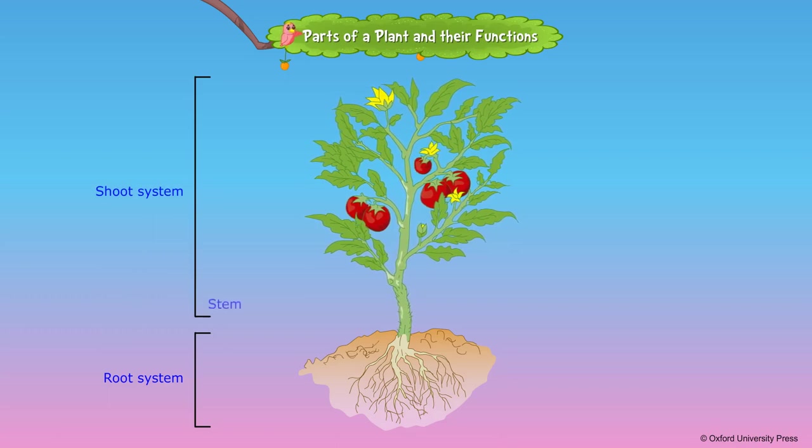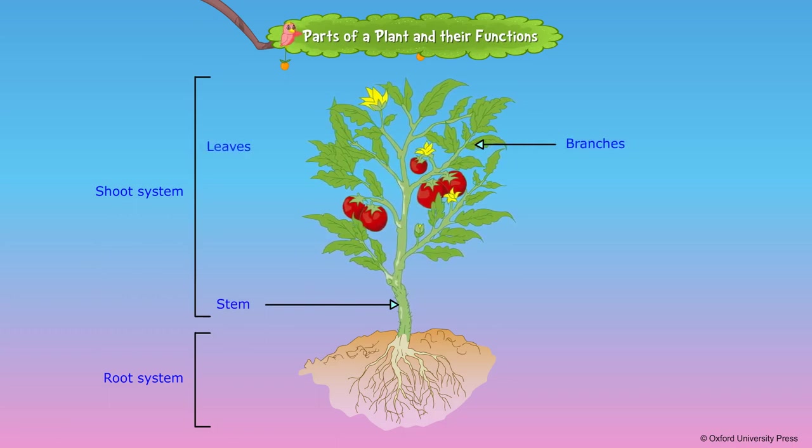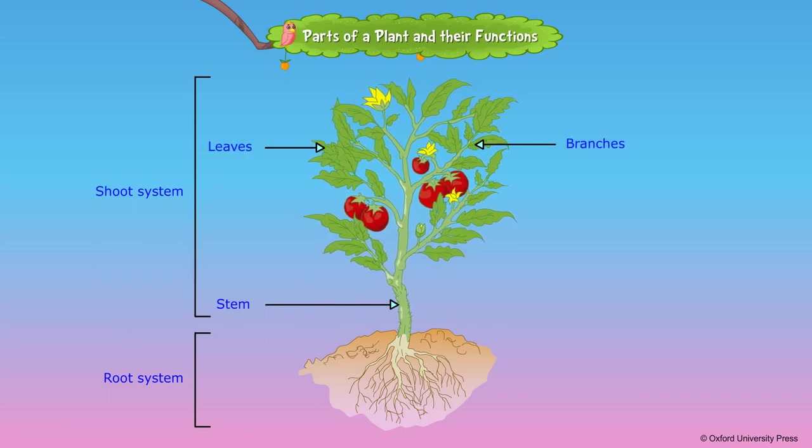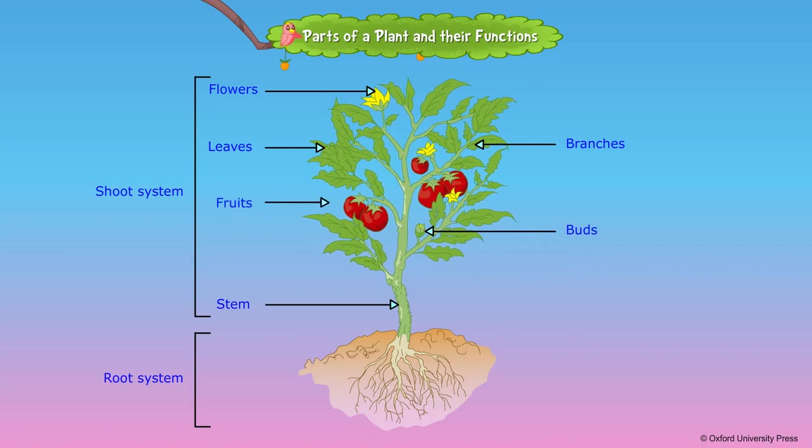The shoot system consists of stem, branches, leaves, buds, flowers, roots and seeds.